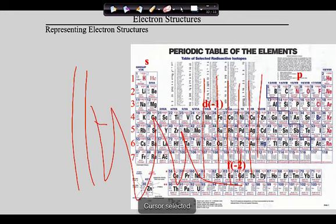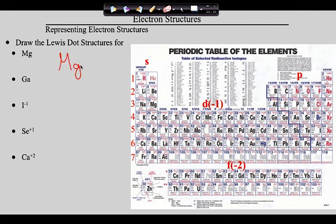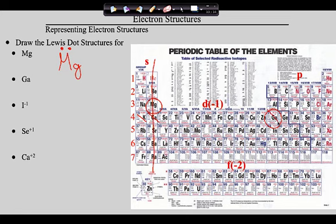Let's look at some examples. First, magnesium — write the abbreviation Mg. Magnesium is in the second group, so it has two dots. Those two dots are paired because they are in the S sublevel. Next, gallium is element 31, in the third column, third group, so it has three dots. The first two must be paired because they are the S electrons, then the third P electron goes unpaired. That's the electron dot diagram for gallium.